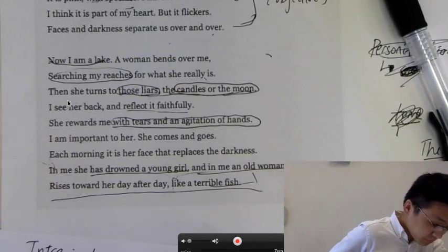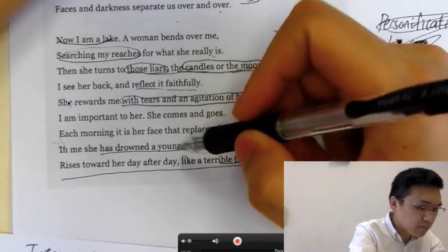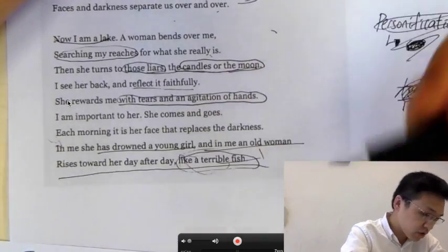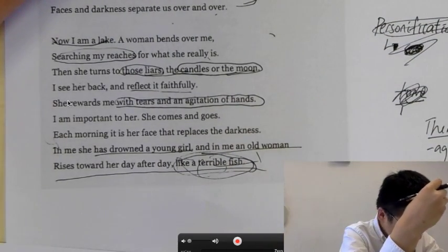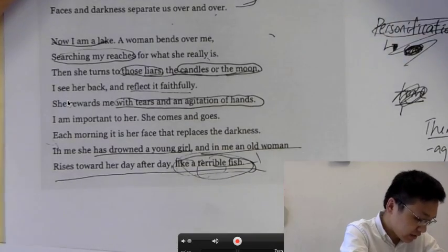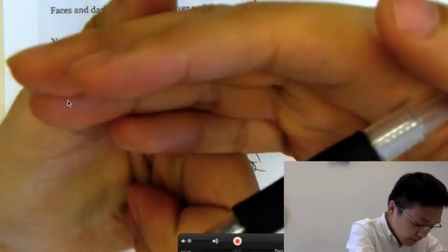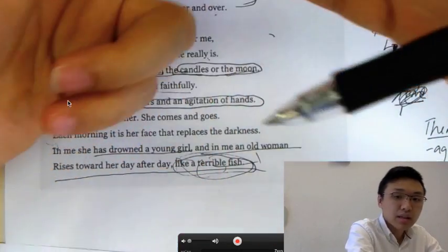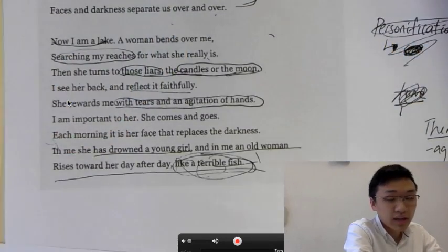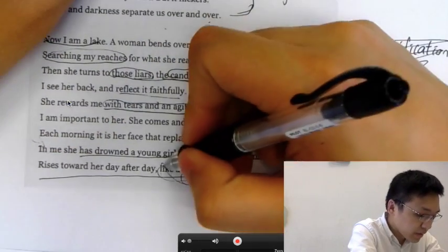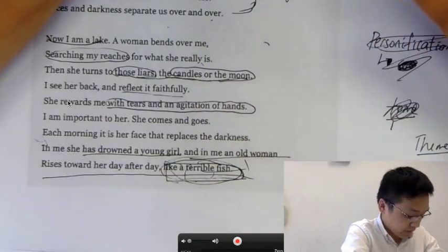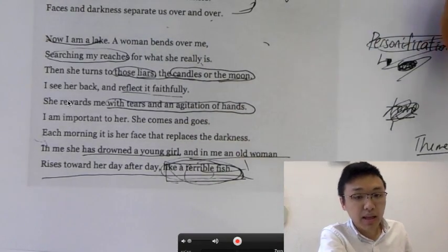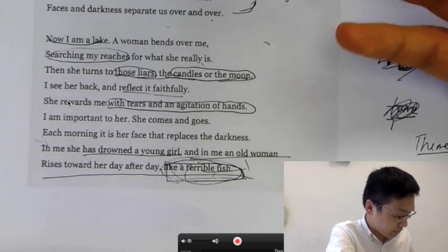Another metaphor that I used is by comparing the old woman to a terrible fish. So what does the terrible fish sort of connotate? So it indicates some sort of weakness, it indicates uselessness, and it indicates ugly appearance. So it connotes how Sylvia Plath dislikes aging.